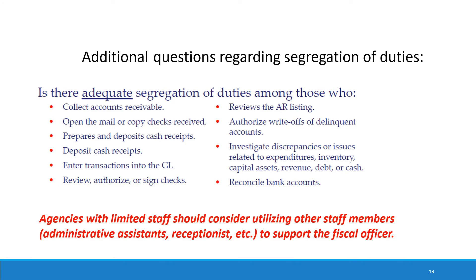Additional items to consider when reviewing segregation of duties: Is there adequate segregation among those who collect accounts receivable, open the mail or copy checks received, prepare and deposit cash receipts, enter transactions into the general ledger, review, authorize or sign checks, review the accounts receivable listing, authorize write-offs of delinquent accounts, investigate discrepancies related to expenditures, inventory, capital assets, revenue, debt, or cash, and reconcile bank accounts. We recommend that agencies with limited staff consider utilizing other staff members such as administrative assistants and receptionists to support the fiscal department.